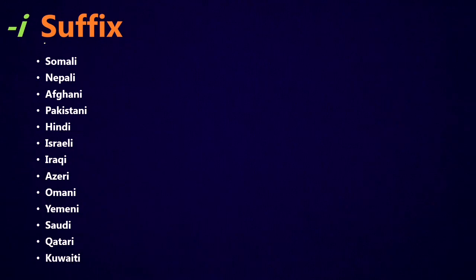The I suffix: Somali, Nepali, Afghani, Pakistani, Hindi, Israeli, Iraqi, Azeri, Omani, Yemeni, Saudi, Qatari, Kuwaiti. If you look at this group, it seems to be mostly used for countries that are in the Middle East. Now Somali is not in the Middle East, but it is very close to the Arabian Peninsula. The only one here that really doesn't fit is Nepali. But for the other ones, they're mainly countries that are in the Middle East or Central Asia.